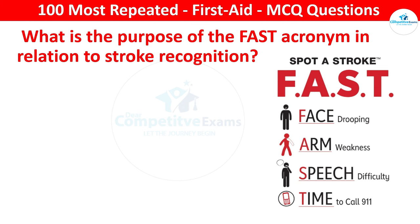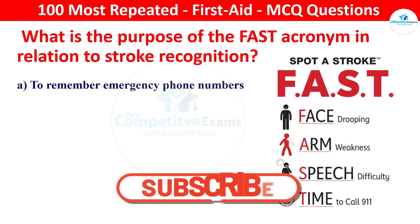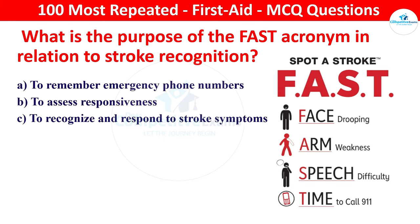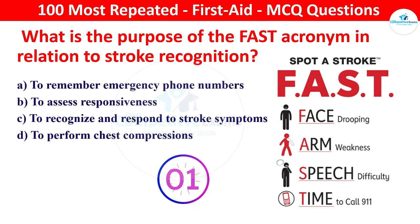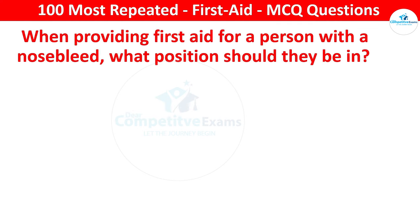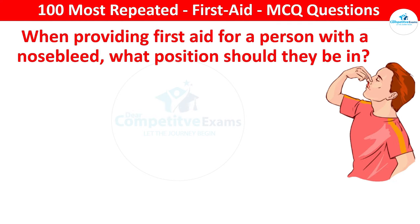Next question: what is the purpose of the FAST acronym in relation to stroke recognition? Options: to remember emergency phone numbers, to assess responsiveness, to recognize and respond to stroke symptoms, or to perform chest compressions. The right answer is to recognize and respond to stroke symptoms. FAST stands for F - face drooping, A - arm weakness, S - speech difficulty, and T - time to call emergency services, helping identify signs of a stroke.